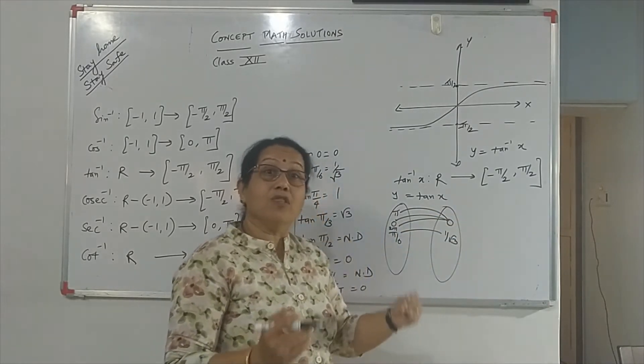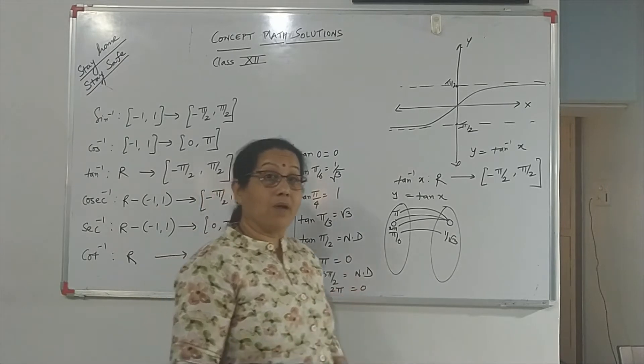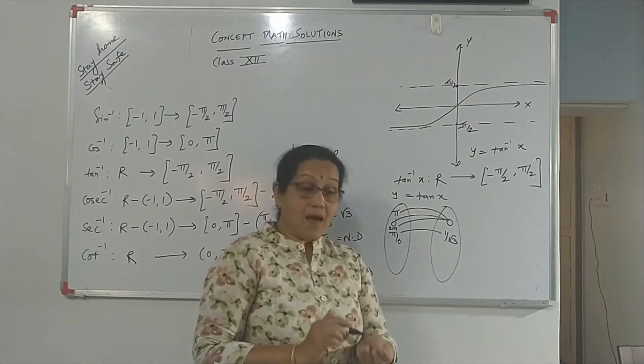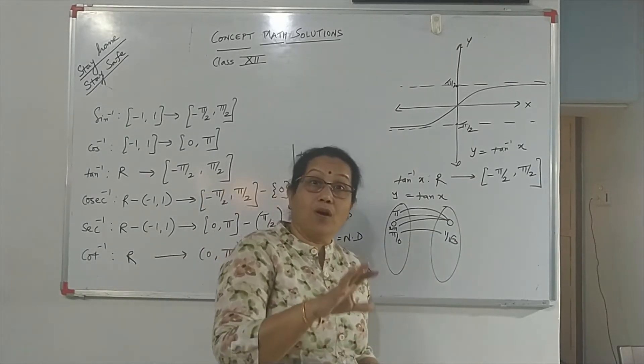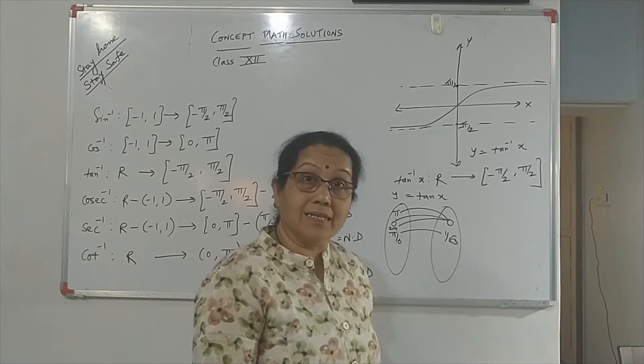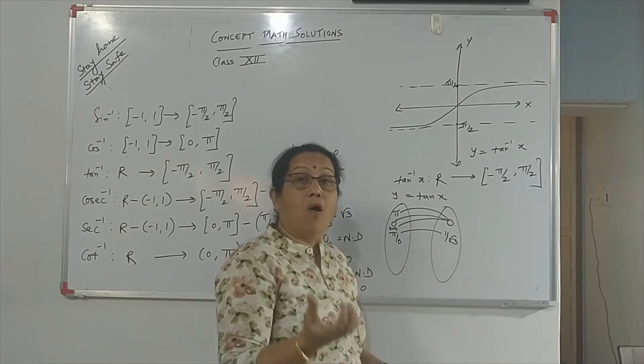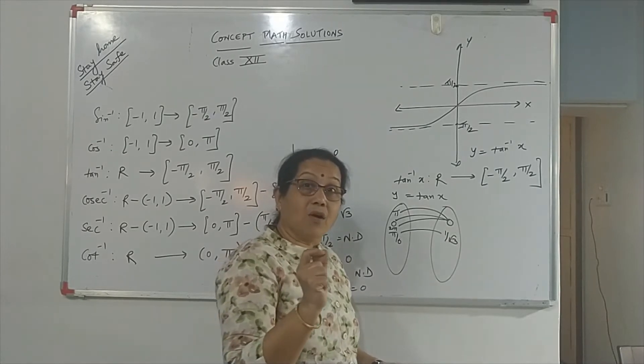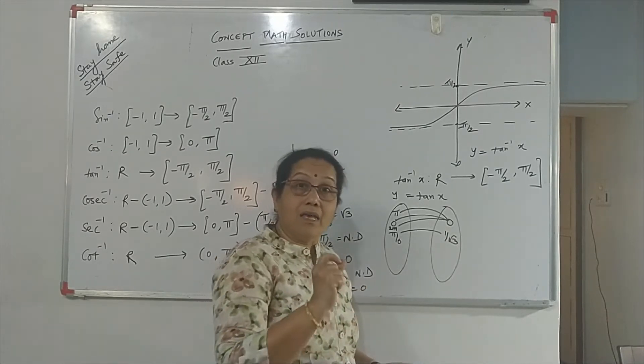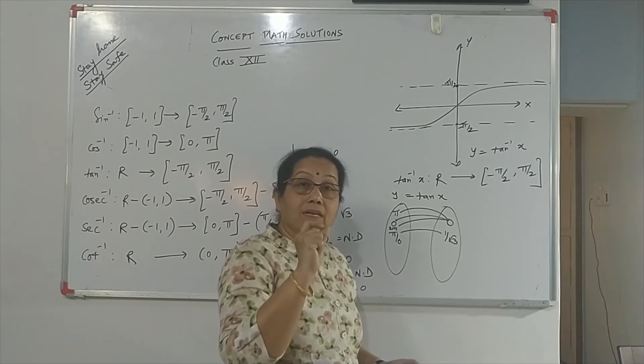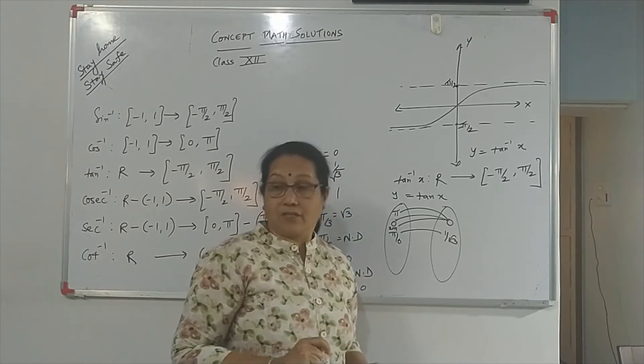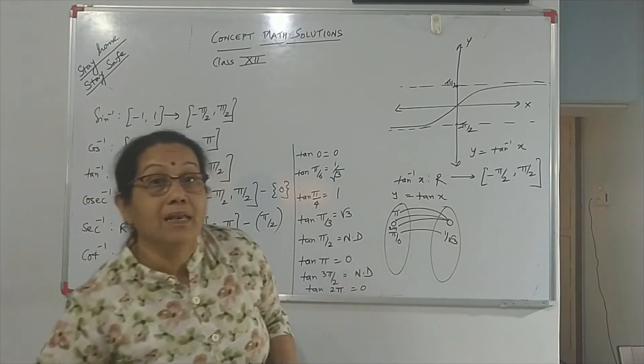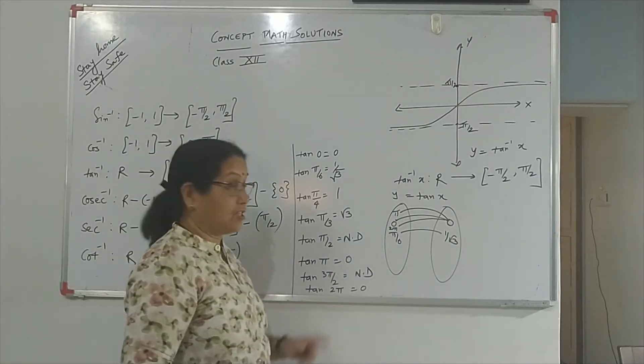Therefore, to make it 1-1, we restrict the domain and range. If you do not restrict, if you take it as R, all the real numbers, then the function does not remain 1-1. Therefore, we need to find the inverse of a trigonometry function. Therefore, we restrict the domain and range of the function.